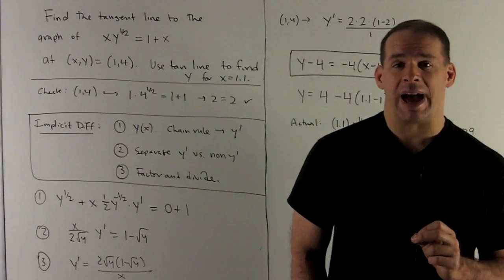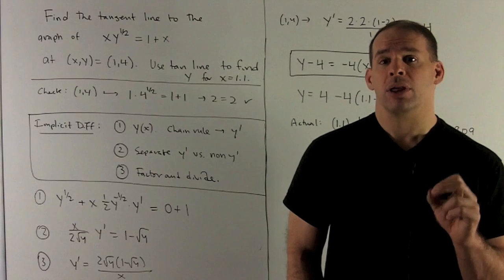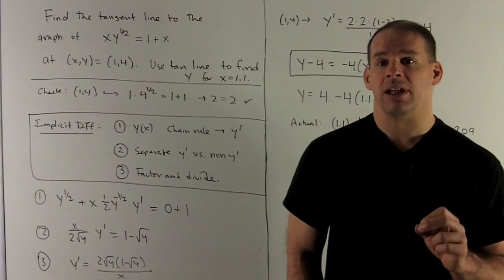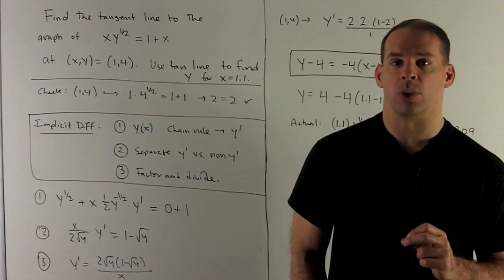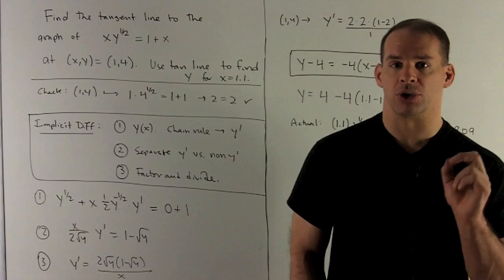The slope is going to be given by getting y' through implicit differentiation, and then we put (1,4) into our equation for our derivative.